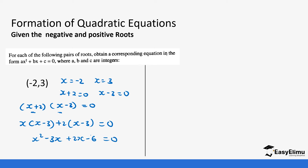So minus three plus two gives us minus one. Our answer becomes x squared minus x minus six equals zero. That is your answer.